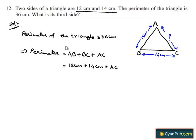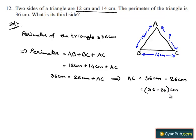And also, they have given that perimeter of the triangle is 36 cm, which is equal to 12 plus 14 plus length of side AC, which gives 26 cm plus length of side AC. This implies AC is equal to 36 cm minus 26 cm. This is equal to 10 cm.